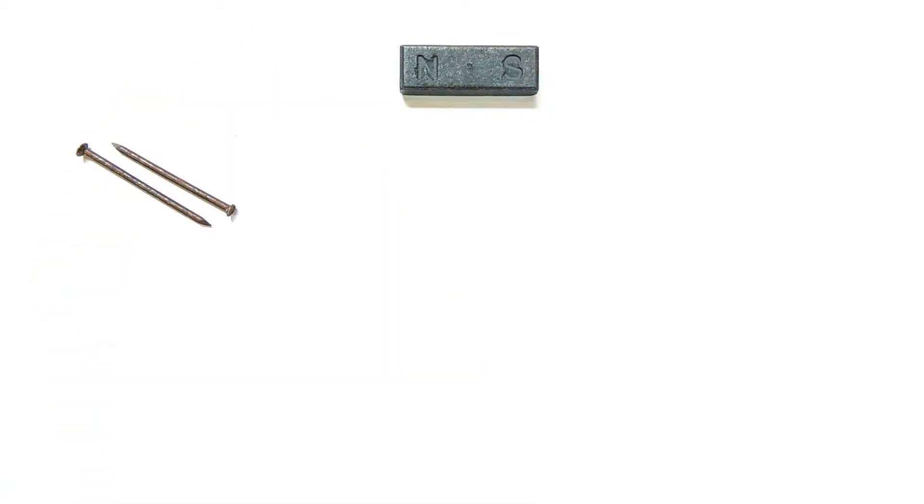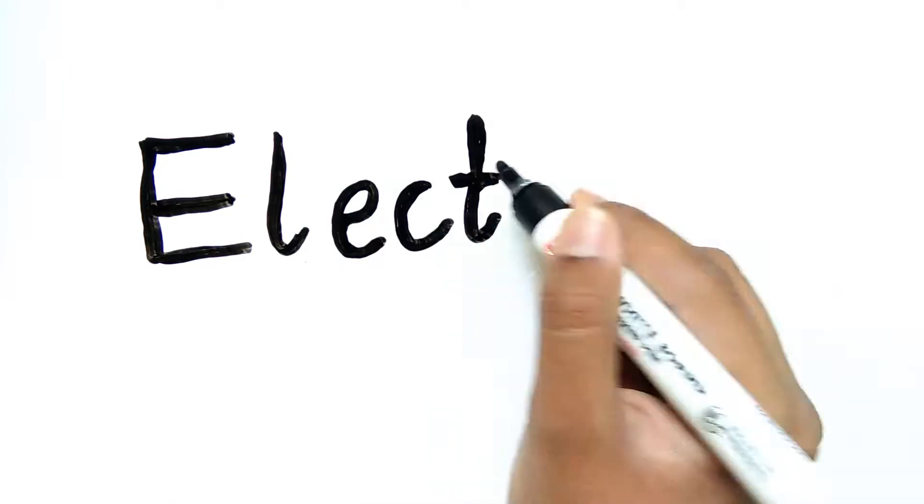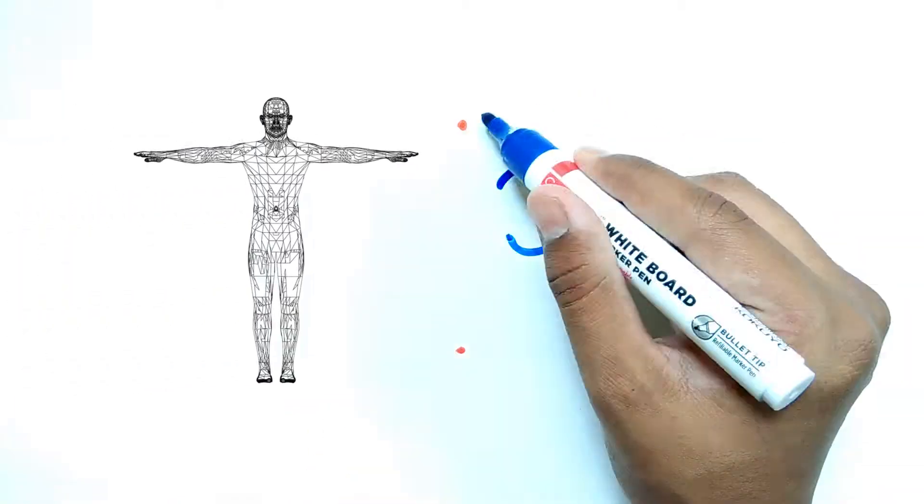Only a few elements can be permanent magnets. Iron is one of them, copper is not. But if you pass an electric current through any metallic conductor, it will create magnetic fields around it. These are called electromagnets.